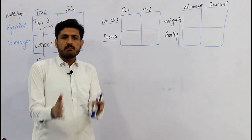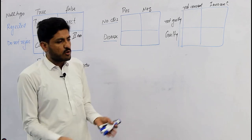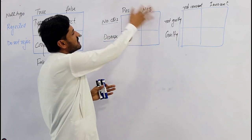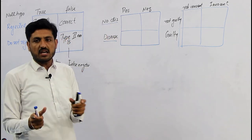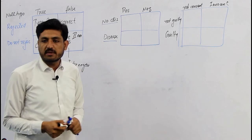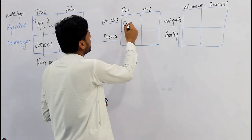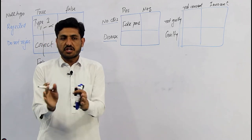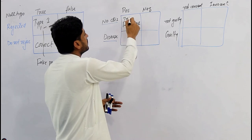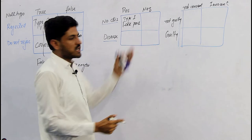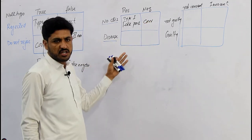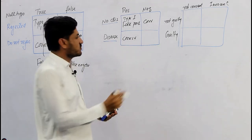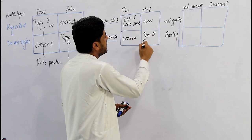پہلی condition: medical screening — مثلاً COVID testing۔ جن لوگوں میں disease موجود نہیں ہے اگر ان کی screening positive آتی ہے تو یہ false positive ہے — یعنی Type 1 error۔ اگر disease نہیں ہے اور negative آتی ہے تو correct decision ہے۔ اگر disease ہے اور positive آتی ہے تو بھی correct decision ہے۔ لیکن اگر disease ہے اور negative آتی ہے تو یہ Type 2 error ہے — یعنی false negative۔